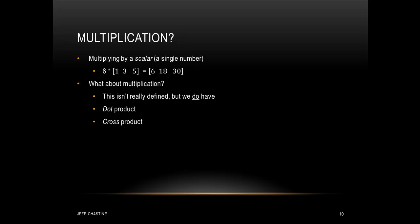What about multiplication? We can multiply a vector by a scalar, which is just a single number. For example, multiplying scalar 6 by vector (1, 3, 5) gives us (6, 18, 30) — essentially 6×1, 6×3, and 6×5. You may wonder if it's possible to multiply a vector by another vector. That operation isn't really defined, but we do have two other operations: the dot product and the cross product.